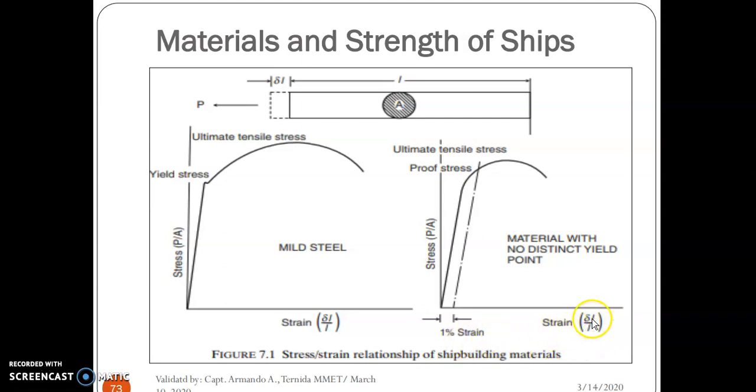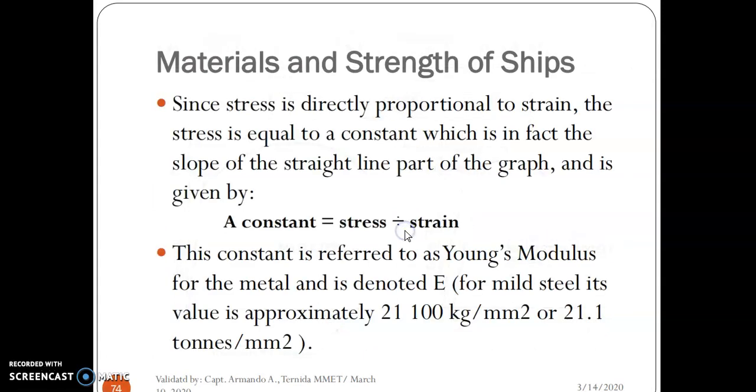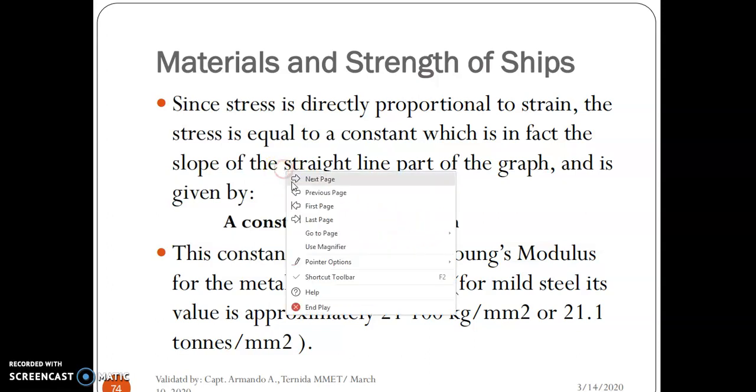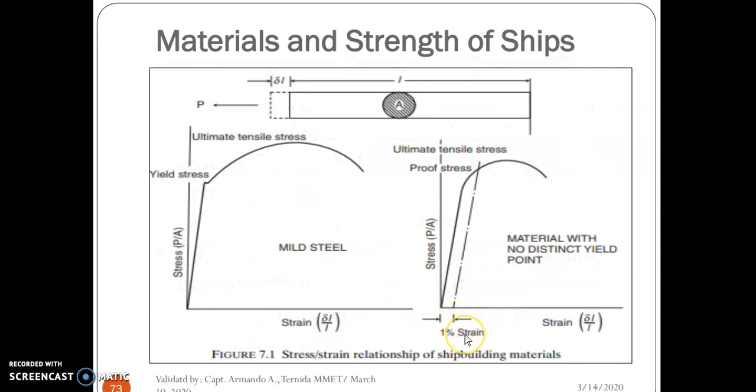So, strain equals extension length over length. Since stress is directly proportional to strain, the stress is equal to a constant, which is in fact the slope of the straight line part of the graph, and is given by: a constant equals stress divided by strain. As you can see, stress and strain.